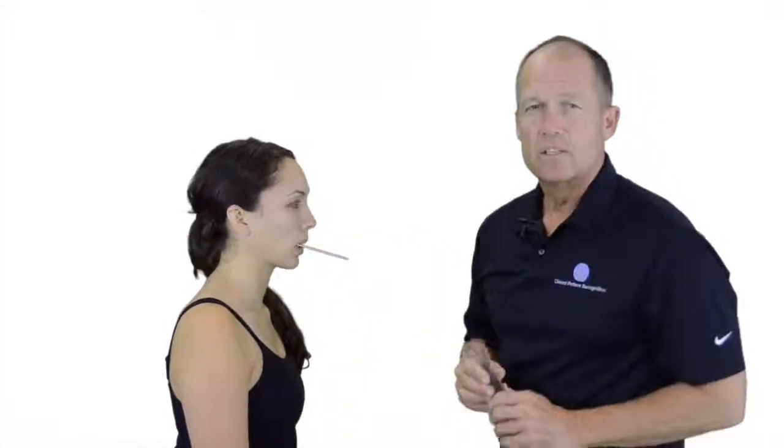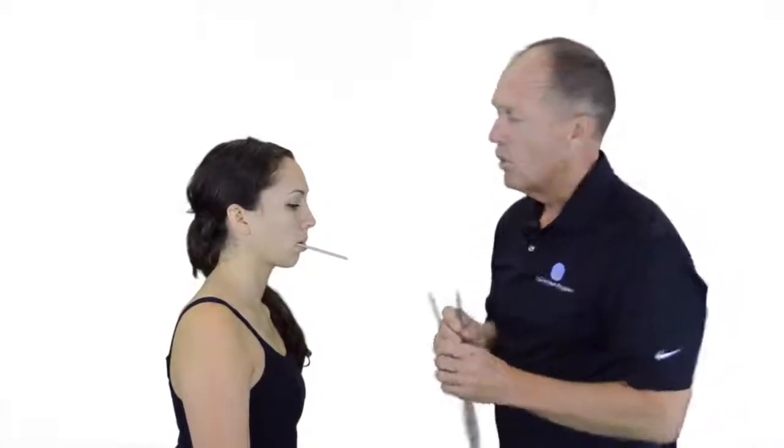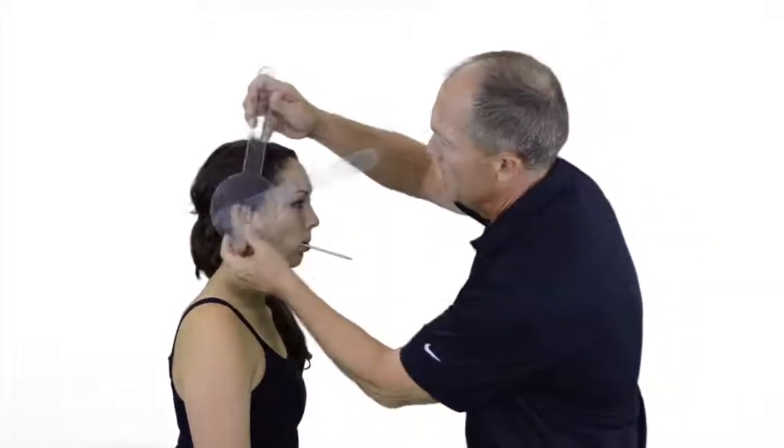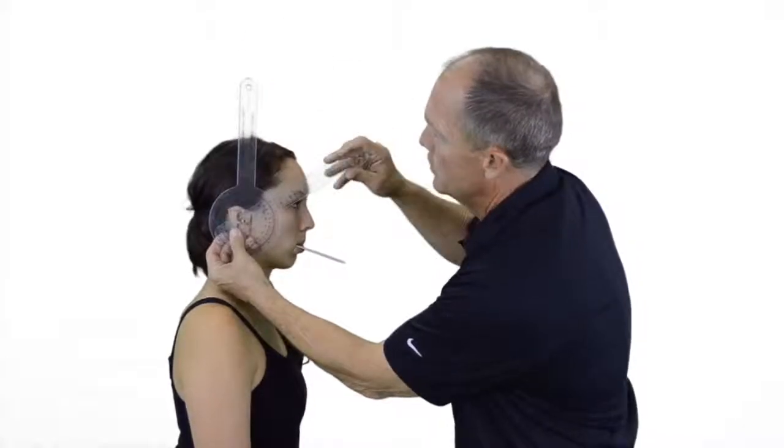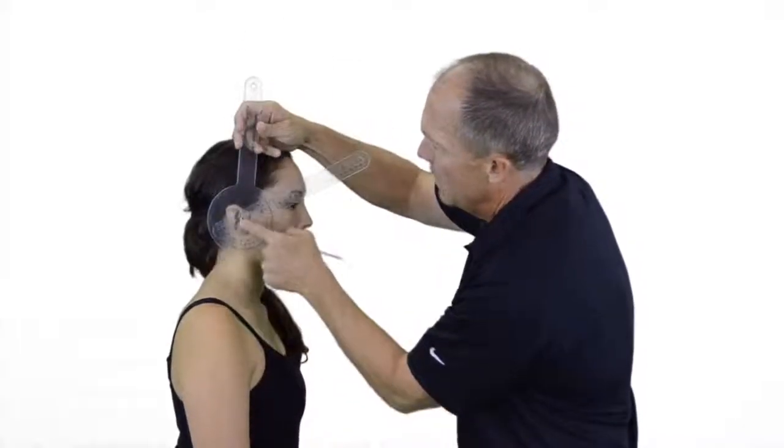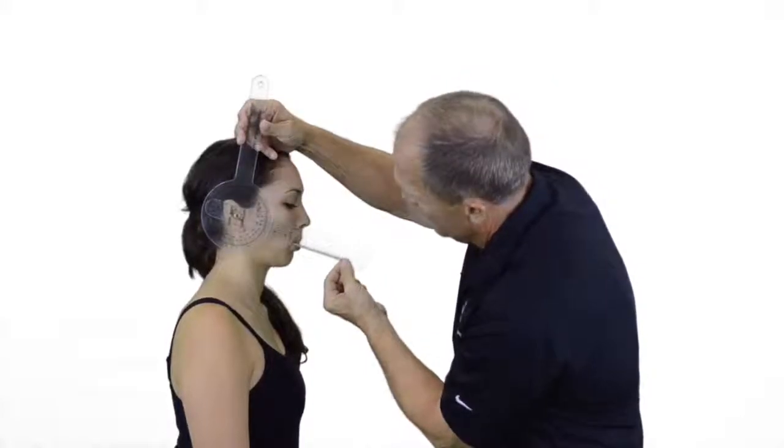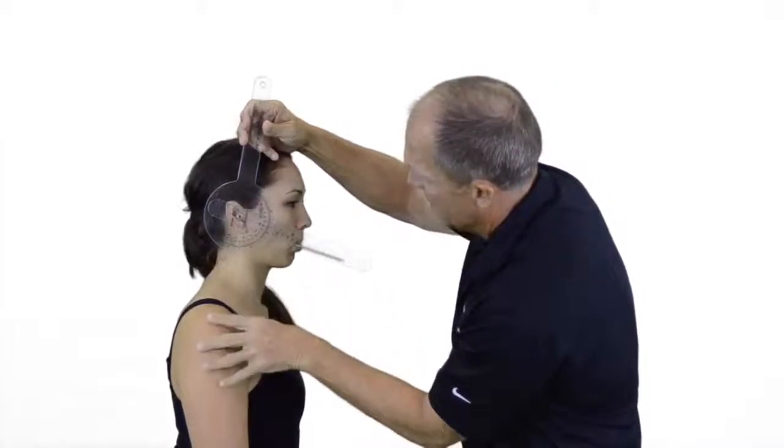This gives you assistance for your alignment. We'll go over the alignment again, which would be external auditory meatus, stationary arm parallel to the ceiling. But now we will have our moving arm parallel to the stick.